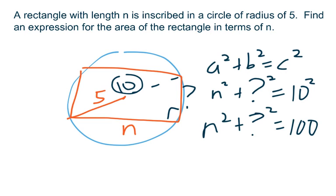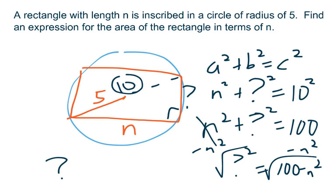And to solve for that something, that question mark, I need to subtract n squared. And I get question mark squared equals 100 minus n squared. Take the square root of it. And the question mark is just going to equal the square root of 100 minus n squared.